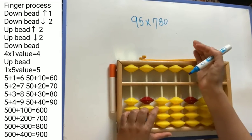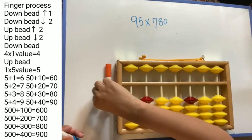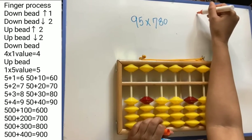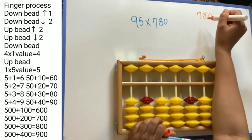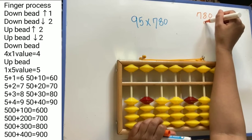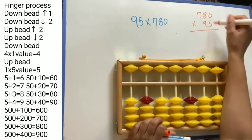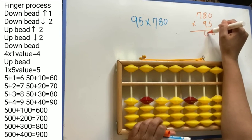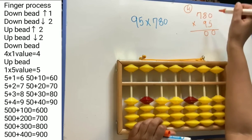Let's do this question first in our normal style. We write it as 780 × 95. Starting with 5: 5 × 8 is 40, write 0 here and 4 here. Then 5 × 7 is 35, plus 4 is 39.